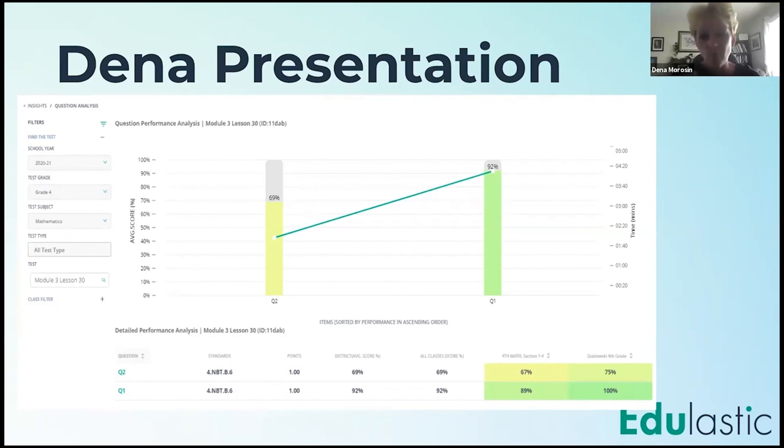The second question was a four-digit divided by one digit, but it had a remainder. And so I can assess that and see, okay, my kids have got the simple division with no remainder, but there's a good chunk of my kids that don't have it when there's a remainder. So again, I know that I need to go back in and work with those specific kids for an intervention to help review with them what to do when there's a remainder.